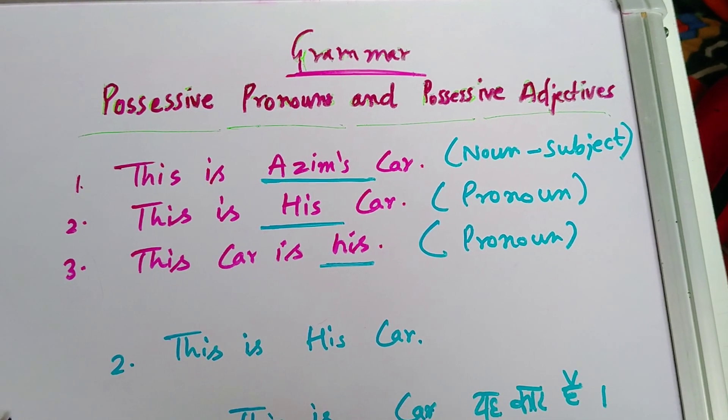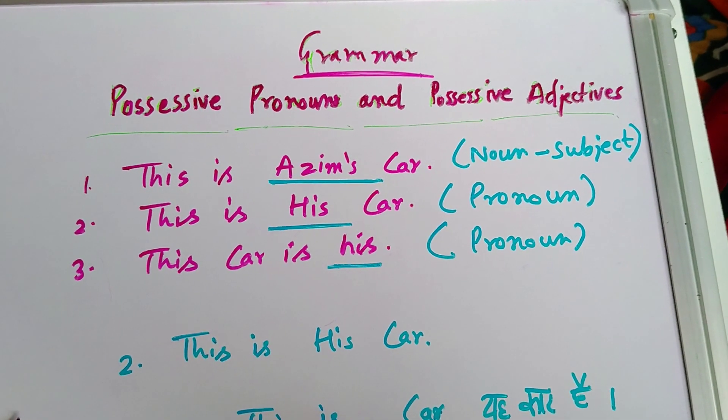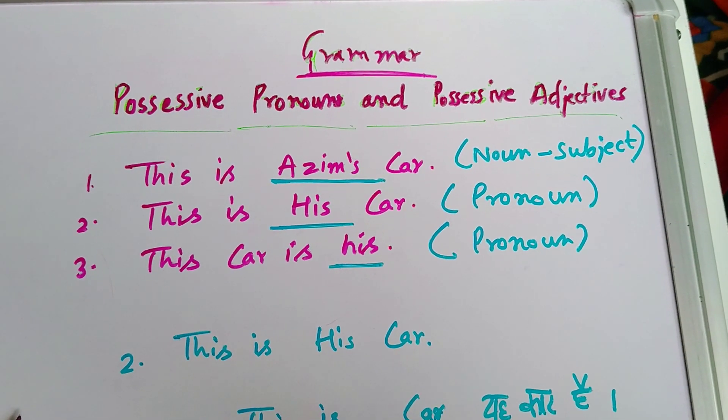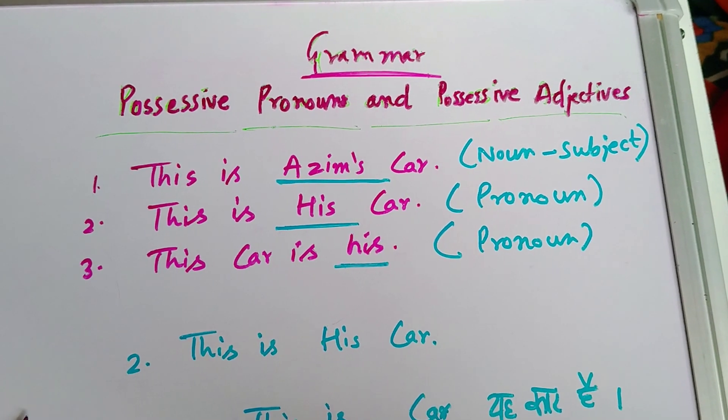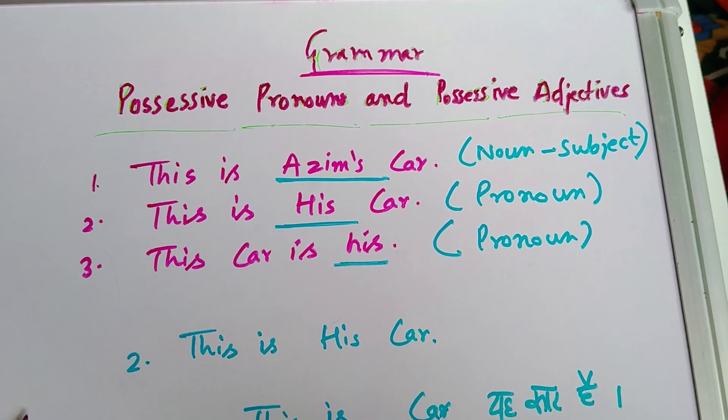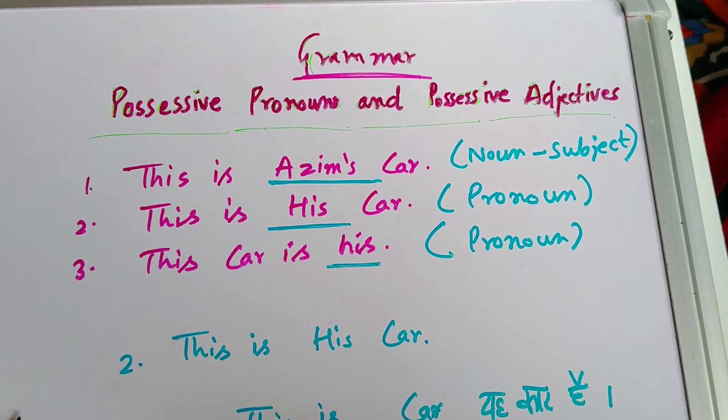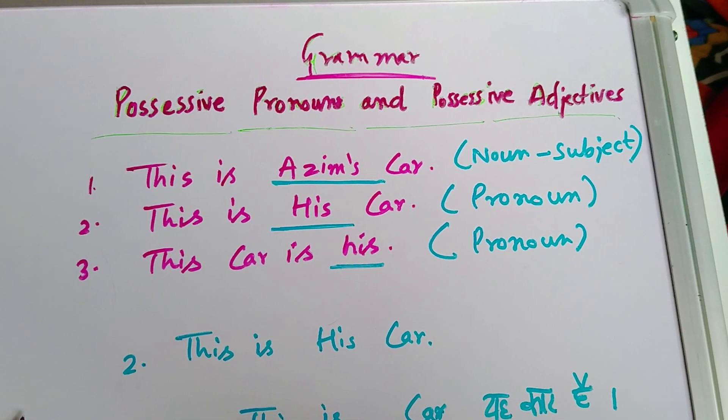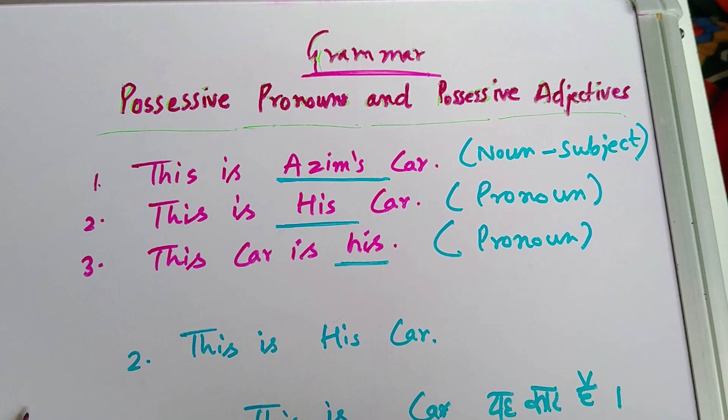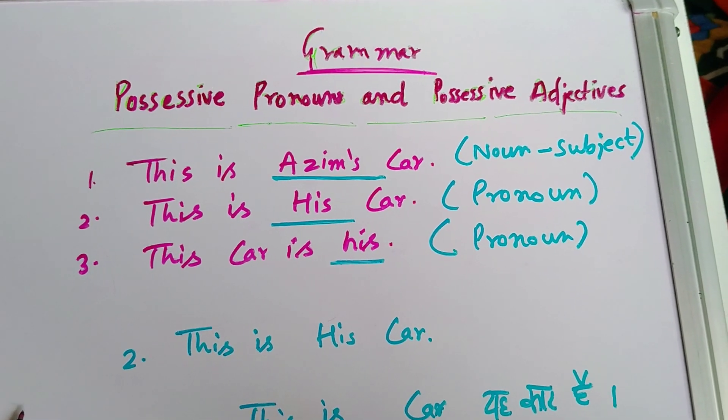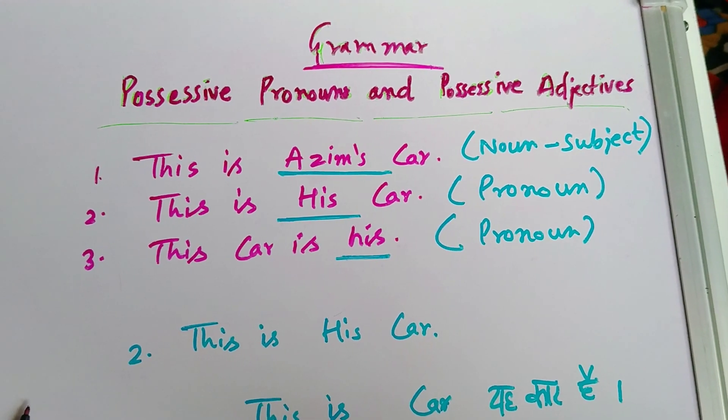But if you read the second sentence, this is his car. Now his is used for whom? Who is used for Azim, because we are aware that Azim is a male. So obviously, male ke liye, the pronoun we use is he or his. So this is his car means this is Azim's car.